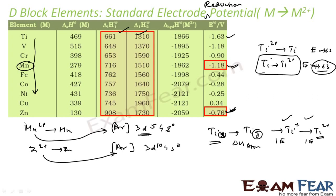Don't get confused: when talking about standard reduction potential, think of the reduction reaction — that is the value given. For the oxidation reaction, you have to change the sign. If standard reduction potential is x, then standard oxidation potential will be minus x for a given reaction.